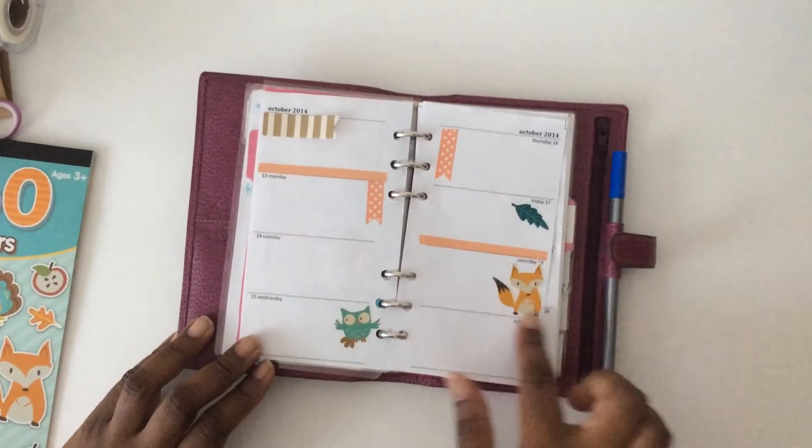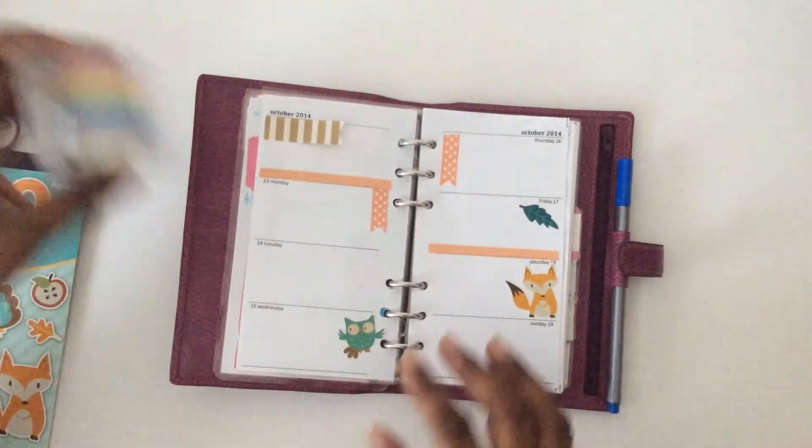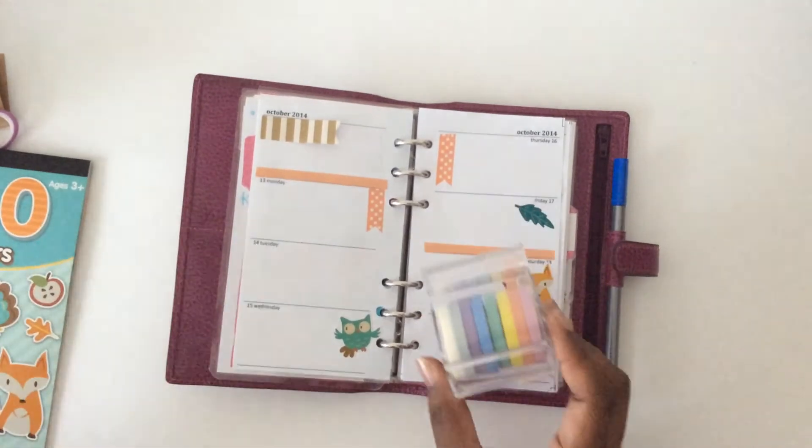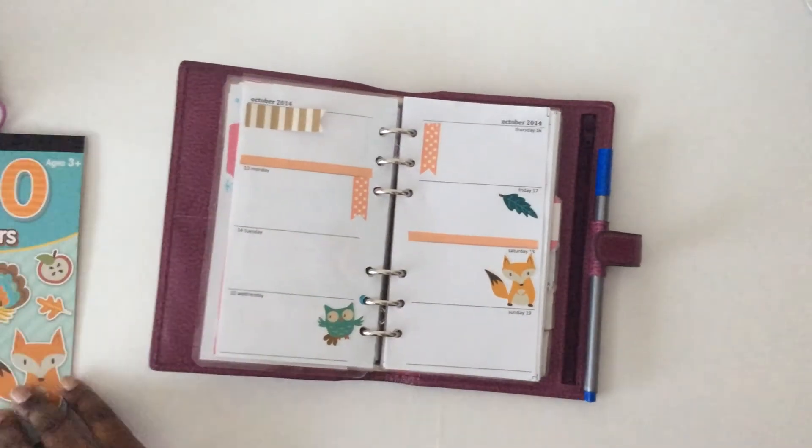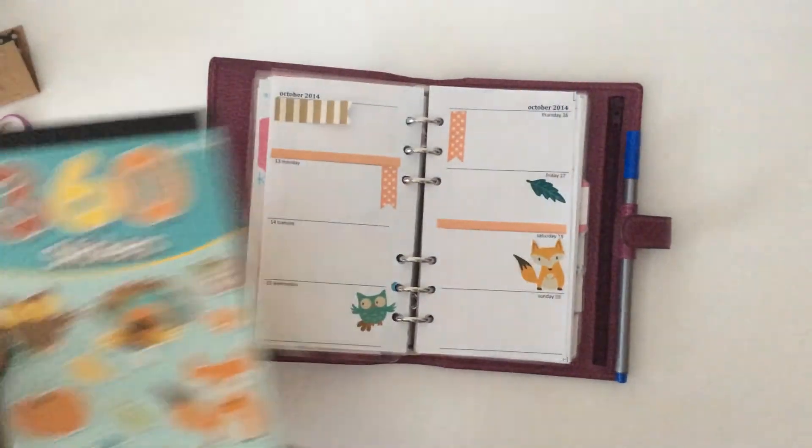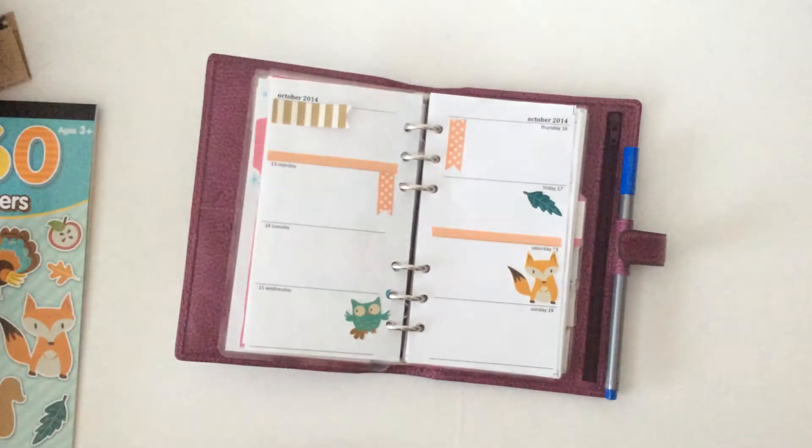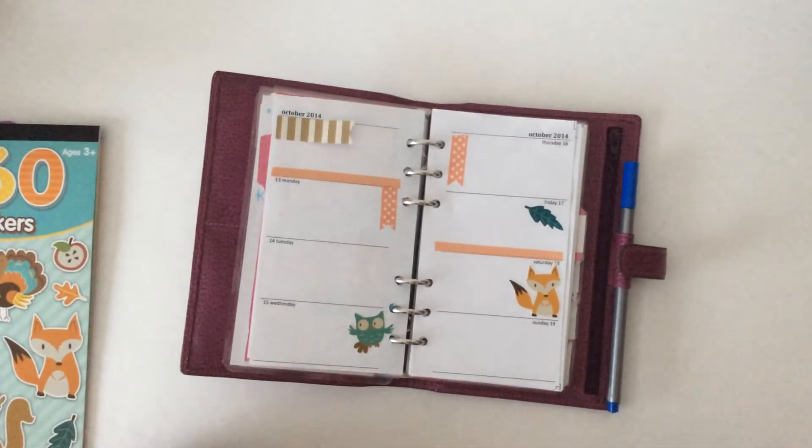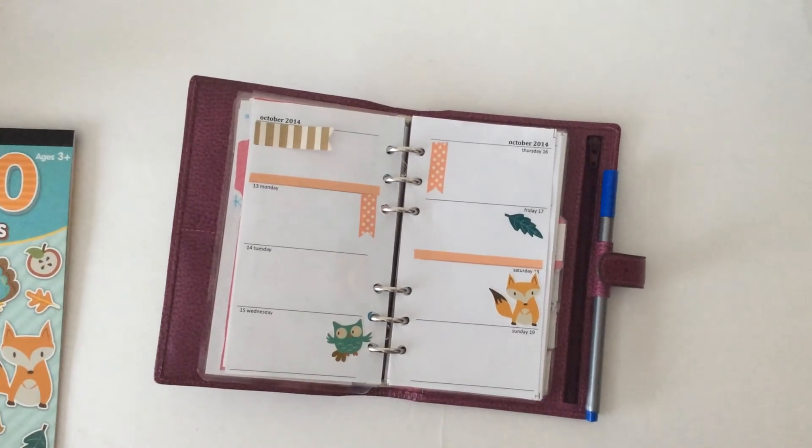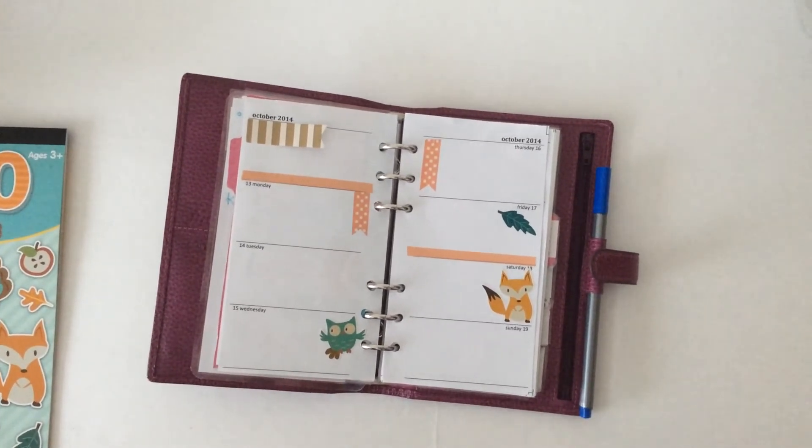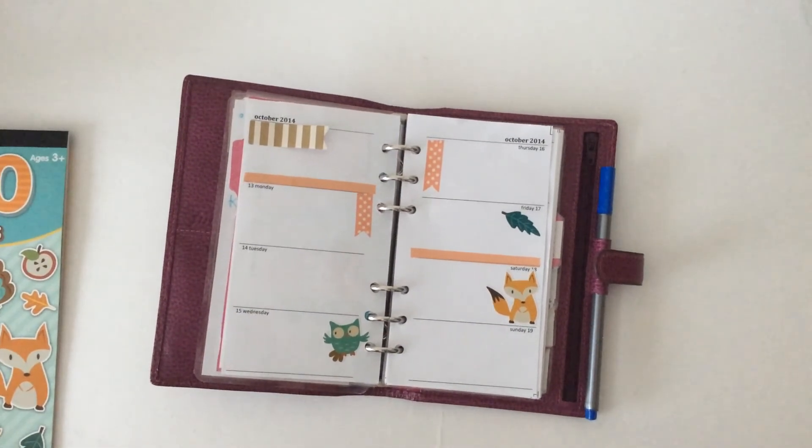Anyway the stickers are from Target. The washi is from Michaels, both of them. This one, the very skinny one, and this one, the not as skinny one. All from Michaels and the sticker book, Target. Flags are from Target and I like how it came out. I think I'm going to enjoy looking at next week even though it's not summery, it's still cute. Hope this inspired you in some way. Thank you so much for watching.